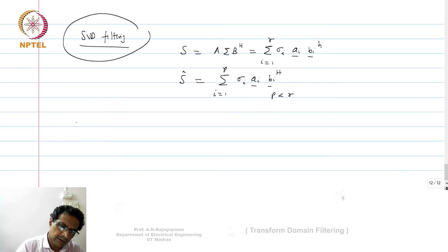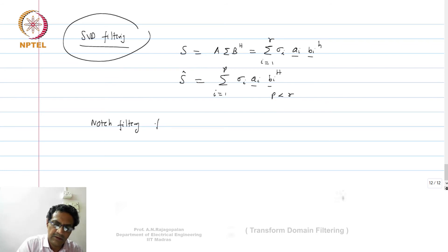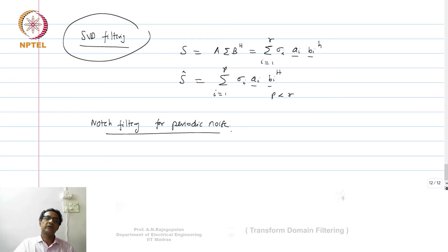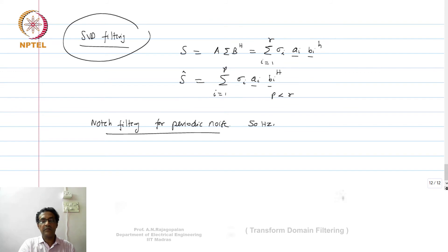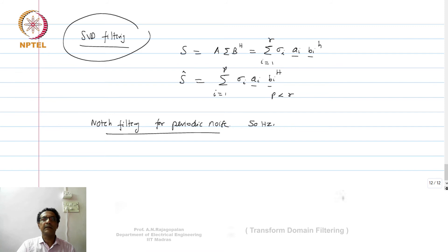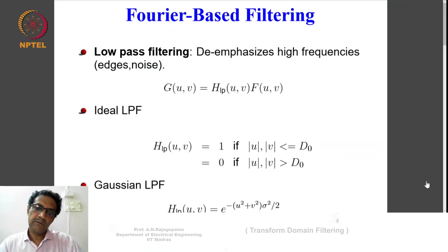One important application of the Fourier kind of filter is notch filtering, especially for periodic noise. As mentioned at the start of noise filtering, you can have 50 Hz periodic noise due to electromagnetic interference. Such noise is very convenient to filter in the Fourier domain because it would appear as a spike at exactly that frequency. If you simply suppress that spike and reconstruct the image, you eliminate the noise. So for certain kinds of noise, doing it in the transform domain makes a lot more sense than in the spatial domain.